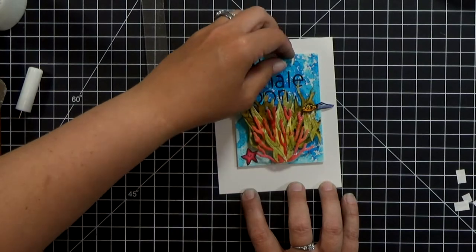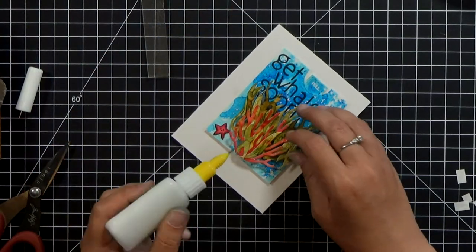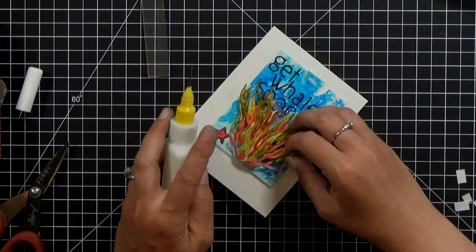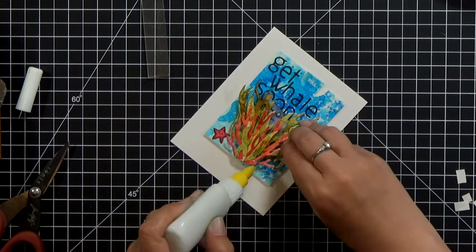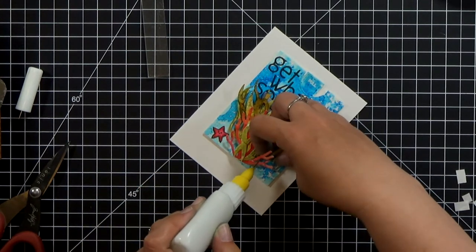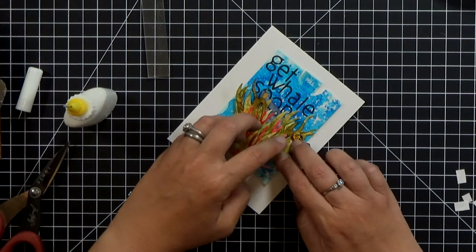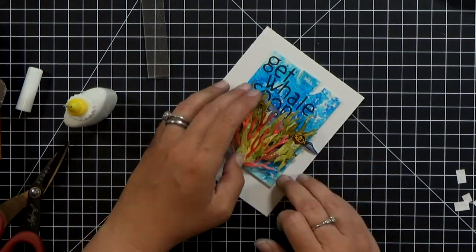Now I did notice that I had one piece of seaweed on that cluster that wasn't completely glued flat to itself so it's kind of tricky to get to it underneath the coral but I was able to slide it up and then just glue it down.